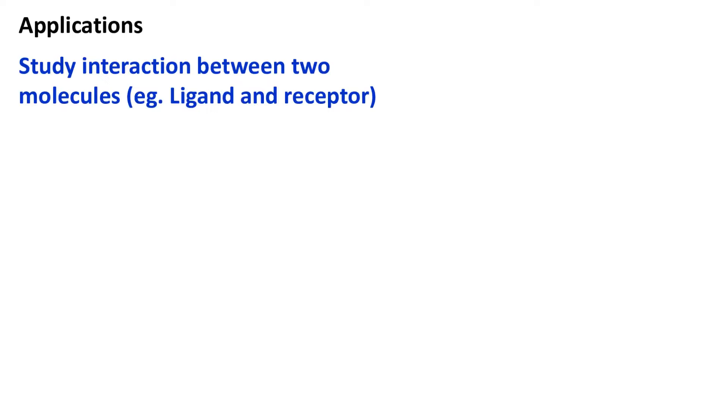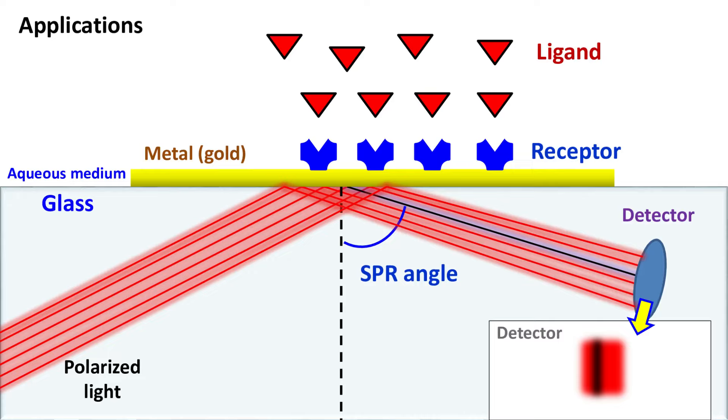Applications. Surface plasmon resonance is widely used to study interaction between two molecules. For example, the interaction between ligand and its receptor. The interaction between ligand and its receptor can be easily detected just by measuring the change in SPR angle.